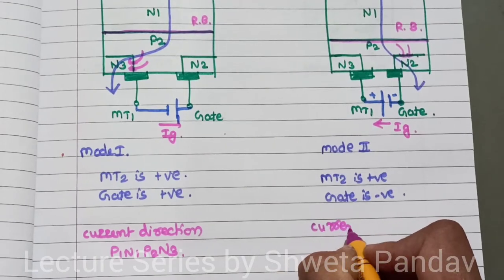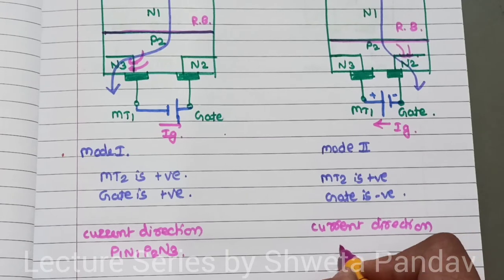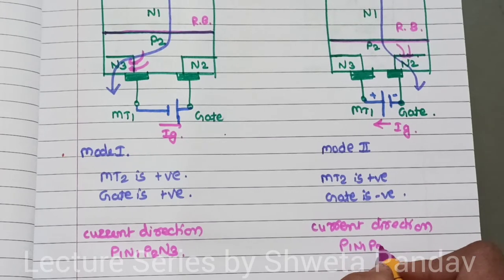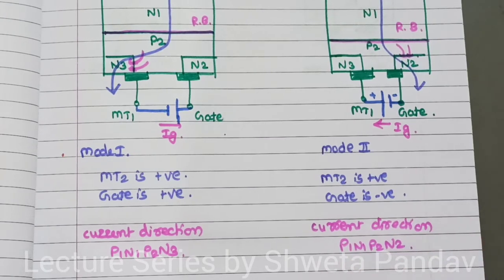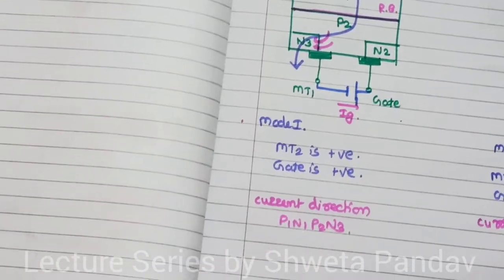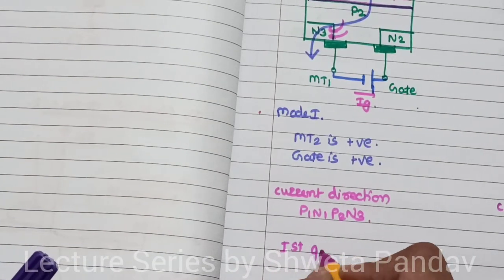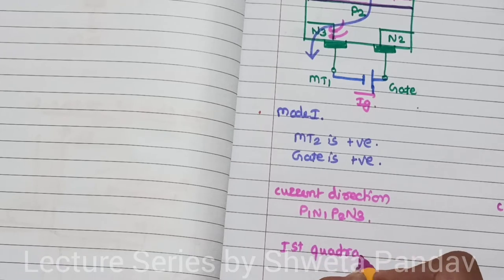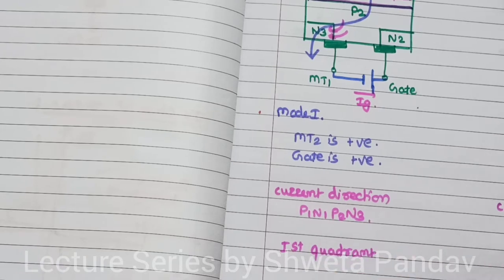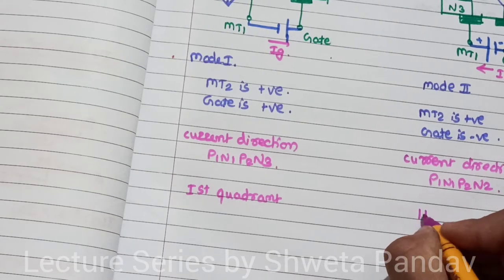Mode 1 of operation is in the first quadrant, and Mode 2 operates in the second quadrant.